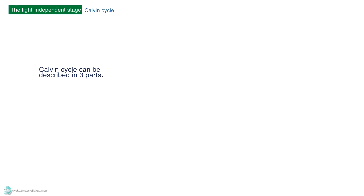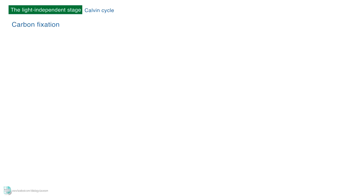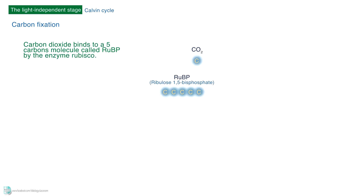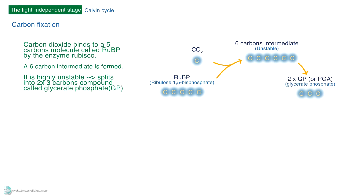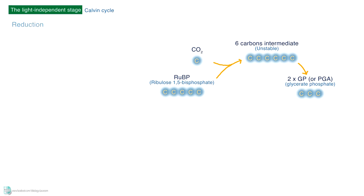We can describe the Calvin cycle in three parts: carbon fixation, the reduction process, and the regeneration of RuBP. Firstly, a carbon dioxide binds to a 5-carbon molecule called RuBP by the enzyme RuBisCO. A 6-carbon intermediate is formed. It is highly unstable, so it splits immediately into two 3-carbon compounds called glycerate phosphate, or GP.